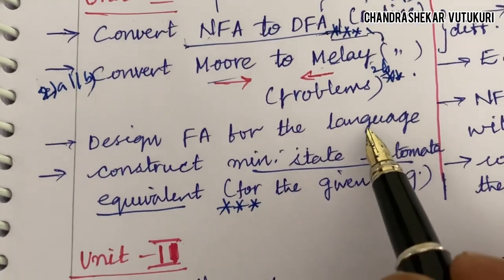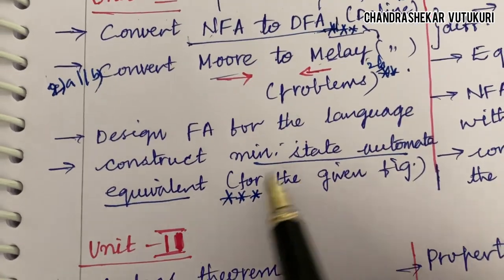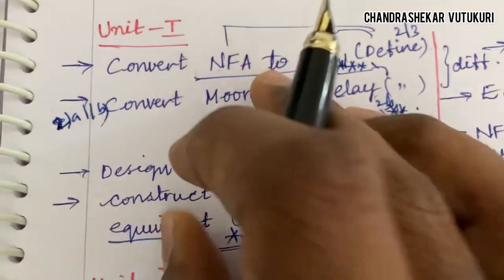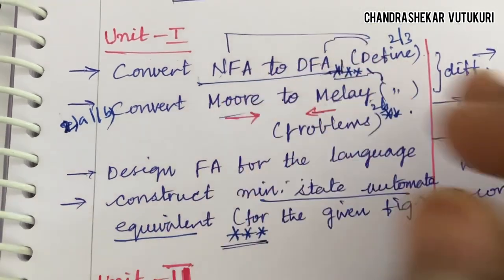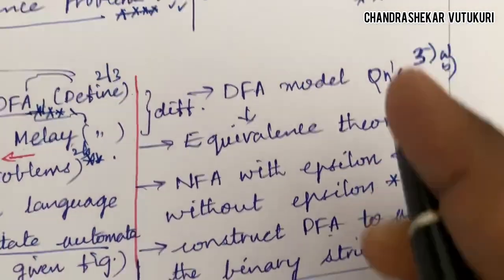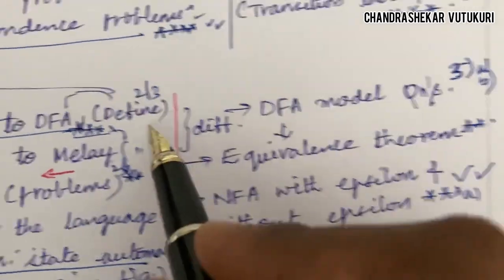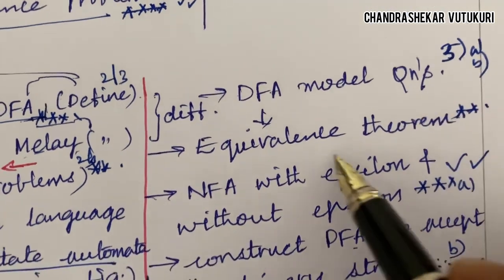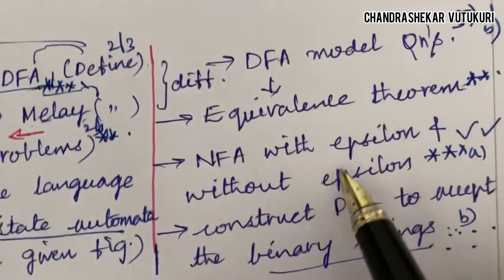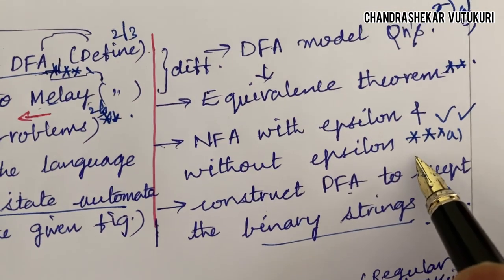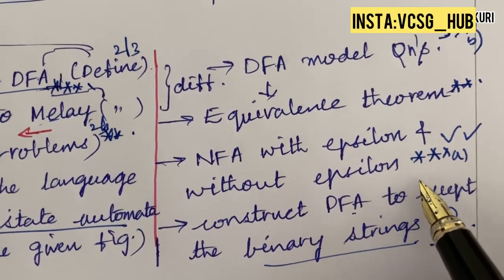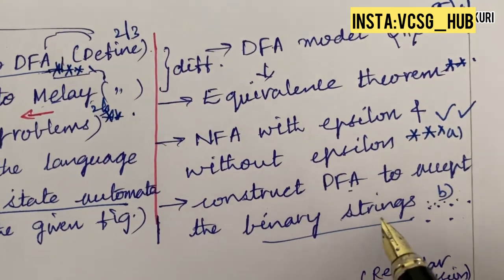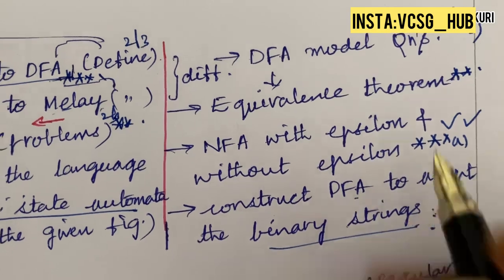Design FA for a given language. Construct minimum-state automata equivalent to a given figure is a topmost gunshot question — questions 2A and 2B may come from this, or sometimes just one question. Differences among DFA models and the equivalence theorem — NFA with epsilon and without epsilon — may be one of the topmost questions you will get in 3B this time. Constructing DFA to accept binary strings is another question expected in 3A and 3B.